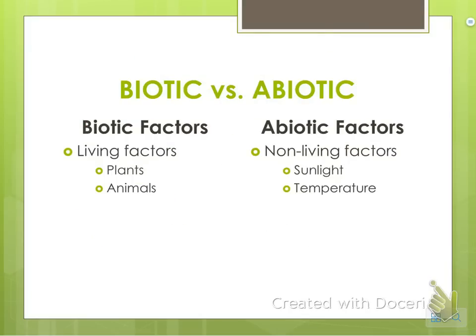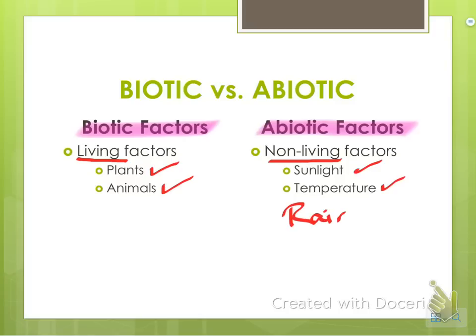Biotic versus abiotic — these are two important things. Biotic factors are your living factors, things like plants and animals. Abiotic factors are your non-living factors: sunlight, temperature, rainfall — all of these things are abiotic factors. A lot of times you'll hear about abiotic versus biotic and what plays a larger role in an organism's relationship, and in most cases it's both things that are involved.